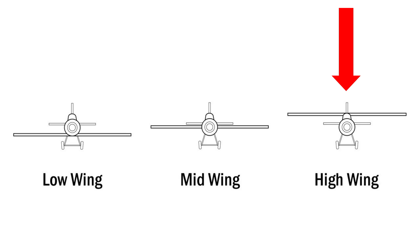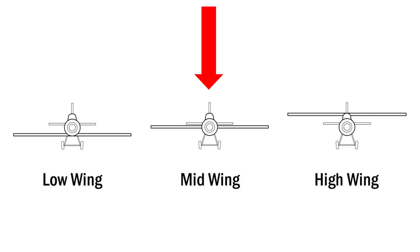Typically, wings are positioned on the fuselage of an aircraft in three different positions: high wing, mid wing, and low wing. The placement of these wings does have aerodynamic effects on the aircraft as a whole. However, the most often cited reason for wing placement is mostly practical.